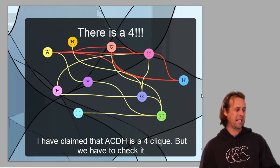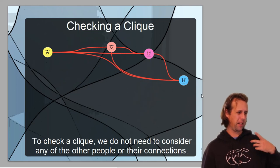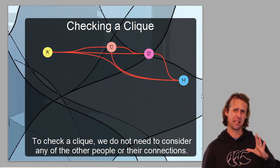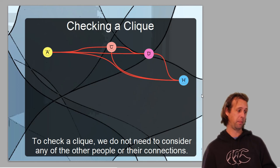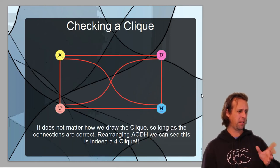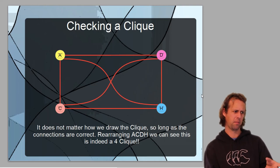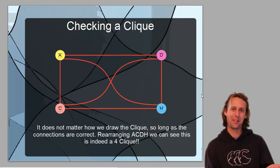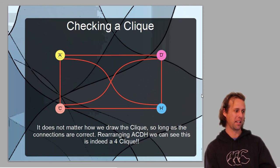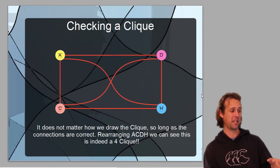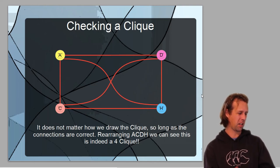So I've claimed that A-C-D-H is a four-clique. Fair enough. But we have to check it. So now we're going to talk about checking if that is actually a legitimate clique. So that's fairly easy to do. What we have to consider is that all of these people have to be friends with each other in order for this to be a legitimate clique. This is a mathematical graph that we're talking about here. This is vertices and edges.